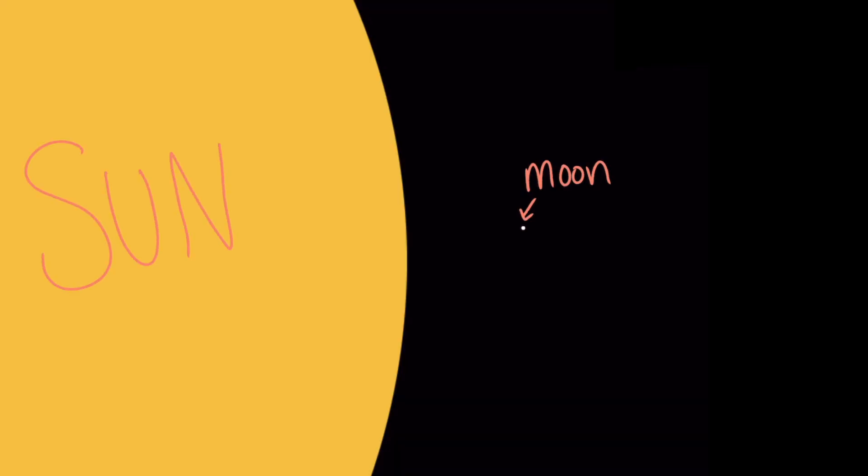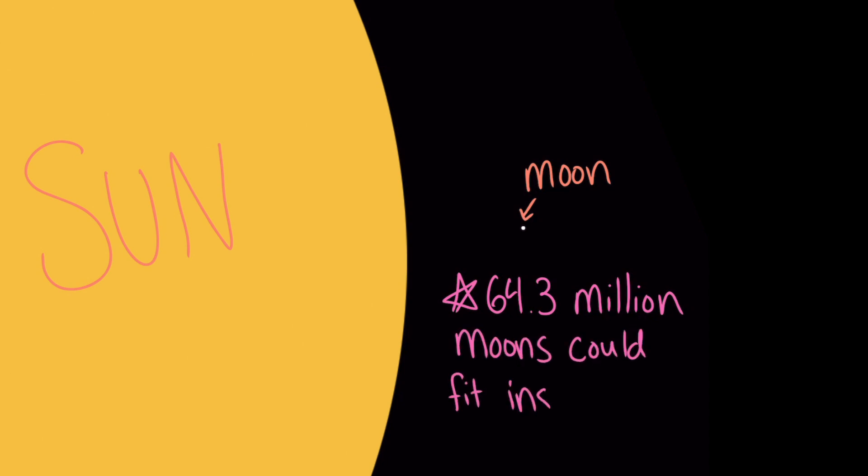But how is it even possible for the moon to appear to block the sun in the first place? The sun and the moon aren't the same size. In fact, the sun is so big that 64.3 million moons could fit inside of it.